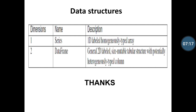Now I am giving a brief description of the data structures of Python pandas. Series is number one — it is one-dimensional, labeled, and homogeneously typed, meaning all data is of one type. The second is DataFrame — it is a two-dimensional, general, labeled, size-mutable tabular structure with potentially heterogeneously typed columns.